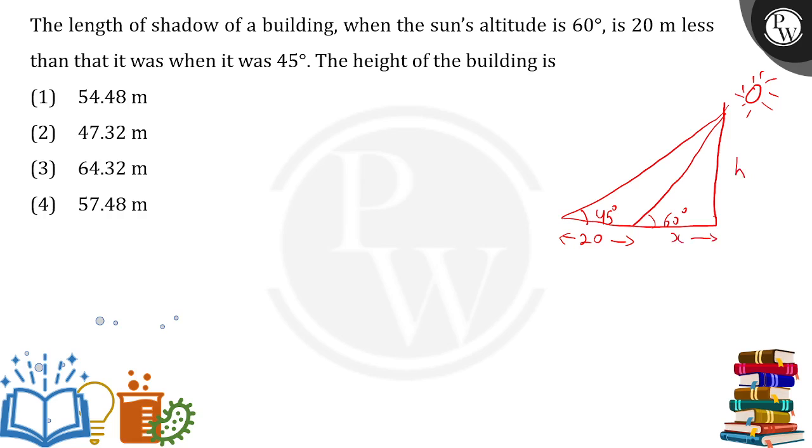So x is missing over here. Let us assume this part to be x. The same method to be applied. Let us talk about the first bigger triangle. Tan 45 degrees, h upon 20 plus x.